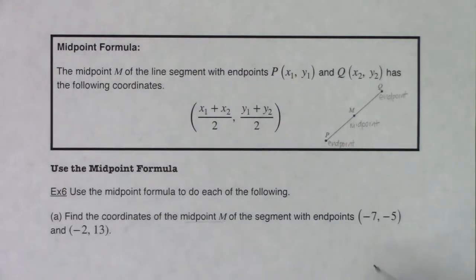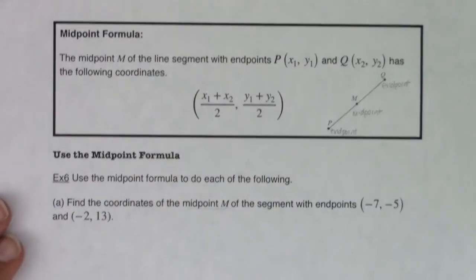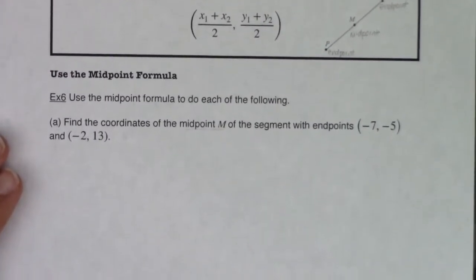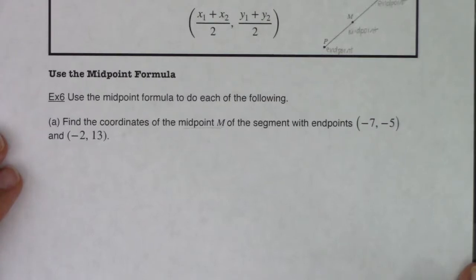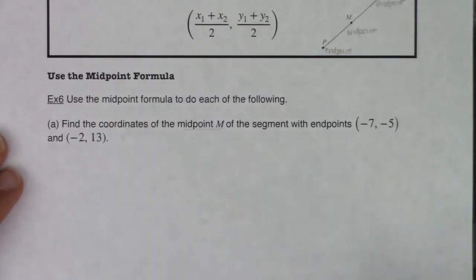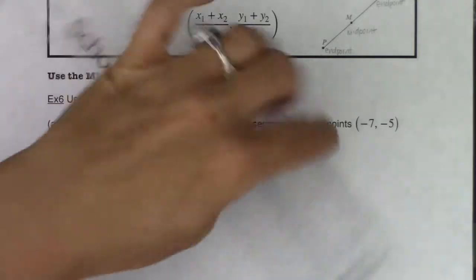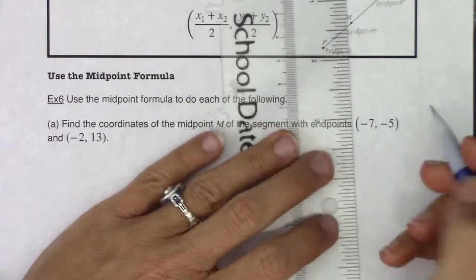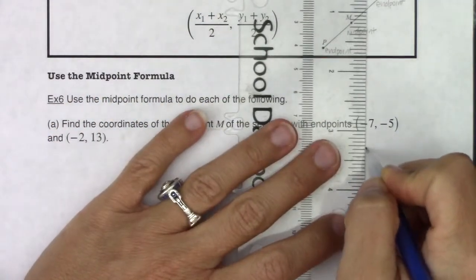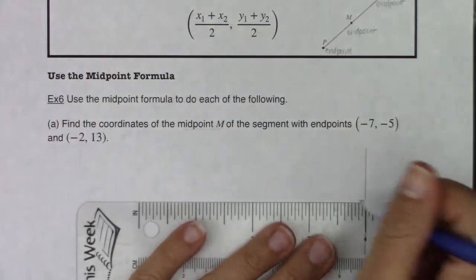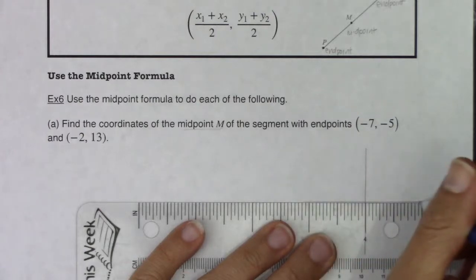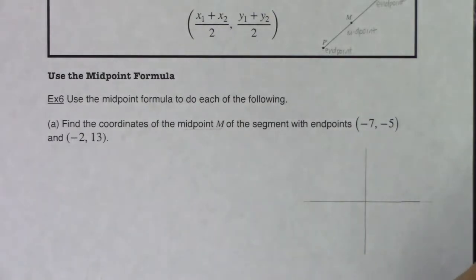Let's just sketch these in our own little coordinate system and see how we're doing. So we'll go right about there. So let me sketch this. What do we got? Negative 7, negative 5, and negative 2, 13. And I'm just going to make my best guess once I get going with this.